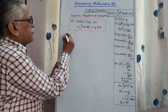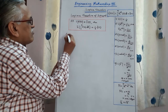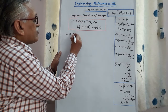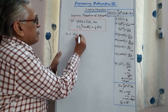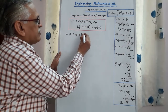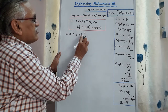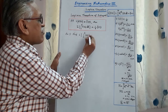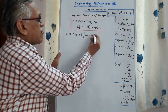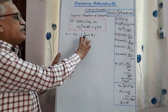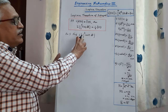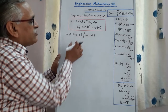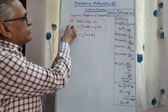Some problems based on this theorem. First example: find the Laplace Transform of the integral from 0 to t of cos(t) dt. Therefore, here f(t) is cos(t), its integration from 0 to t with respect to t, and we are required to find its Laplace Transform. We are supposed to apply this theorem.